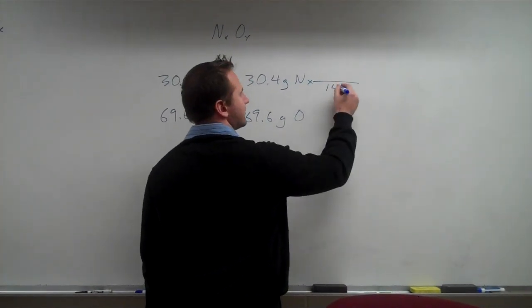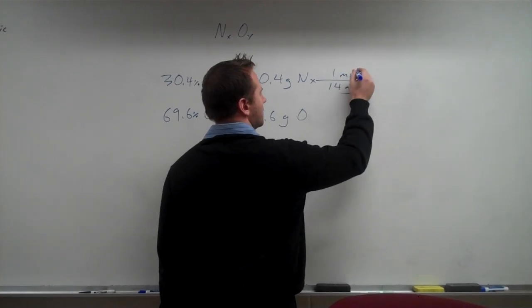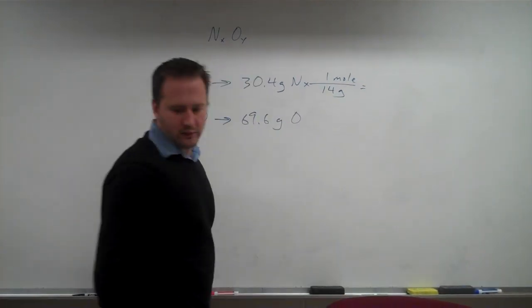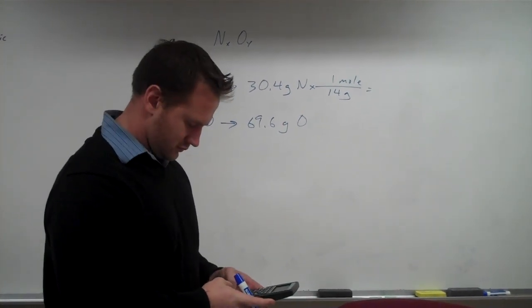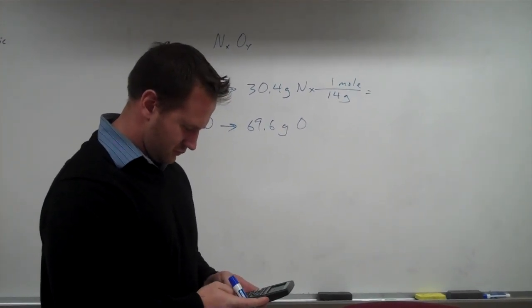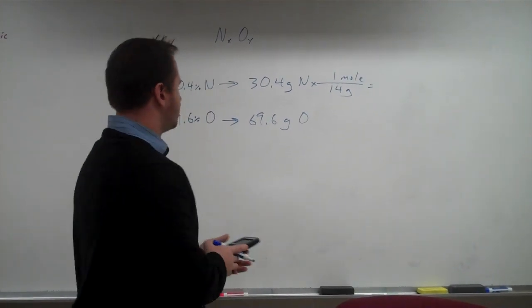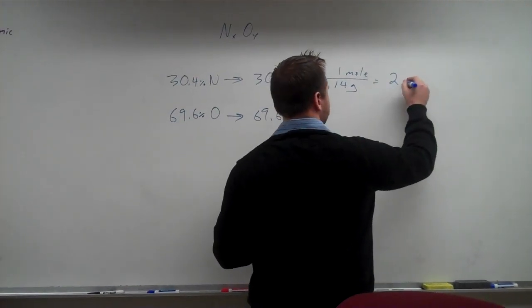So for nitrogen, the molar mass is 14 grams per mole, and that will give us 2.17 moles of nitrogen.